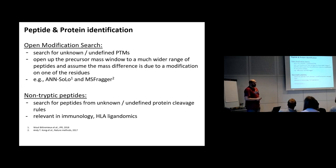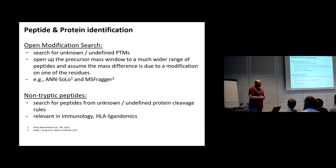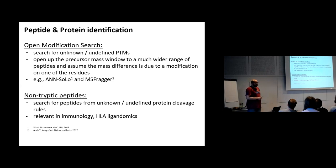Another type of search is open modification search. If you want to discover new modifications or don't know what modifications are in your data, you open up the peptide precursor window to a wider mass range and assume the mass difference between the theoretical peptide and precursor mass is due to some modification on one of the residues. Tools for this include MSFragger and UNSOLO, with MSFragger being fast enough to handle open modification searches. Sometimes you also need to search for non-tryptic peptides — for example, in immunology when looking for MHC or HLA ligands.